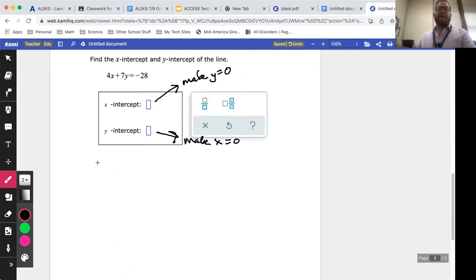So for my X intercept, it's 4x, because I don't know what X is yet, plus seven times zero equals -28. Well, it goes away and you get 4x = -28. Divide both sides by four, and you get x = -7. So I'll put -7 right in here.